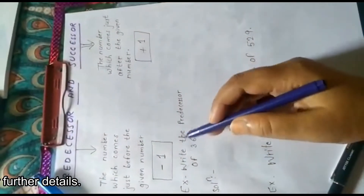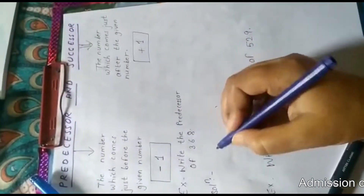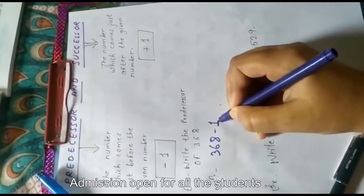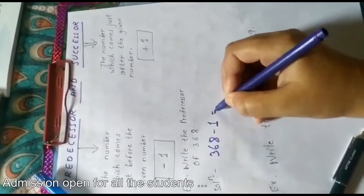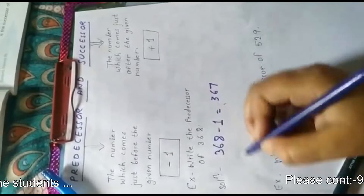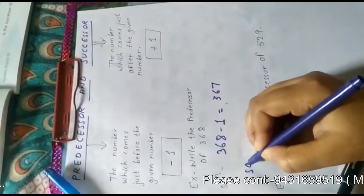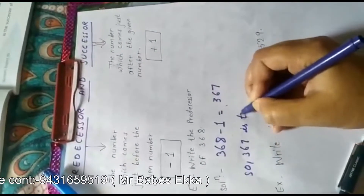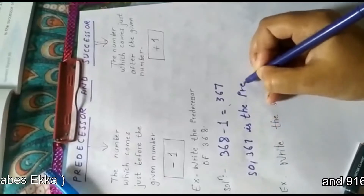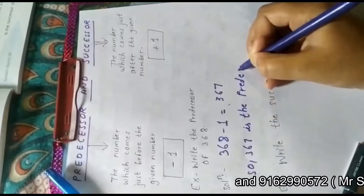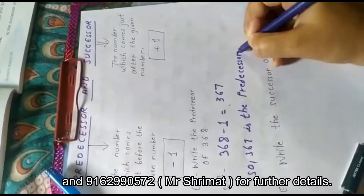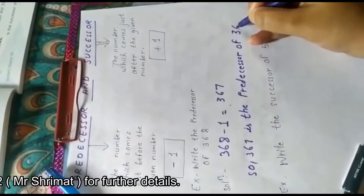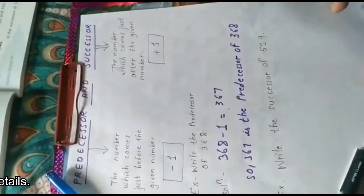For example: write the predecessor of 368. So what we will do is 368 minus 1 equals 367. So 367 is the predecessor of 368.